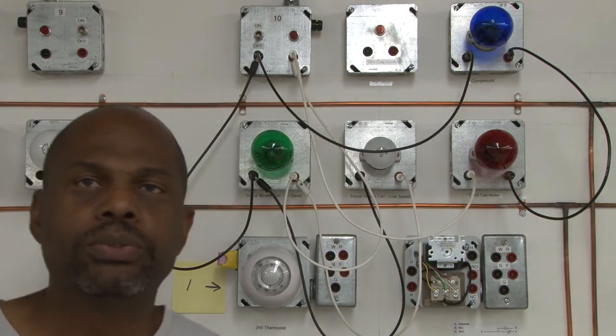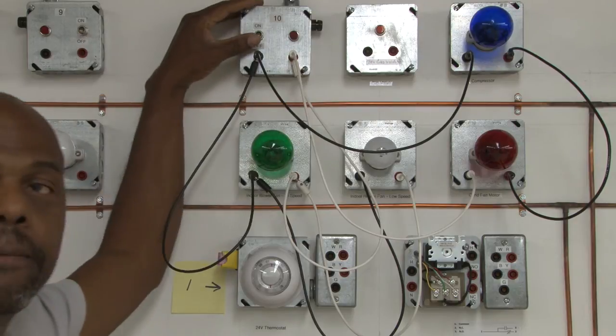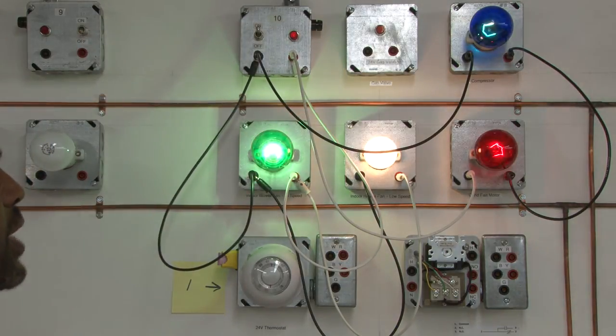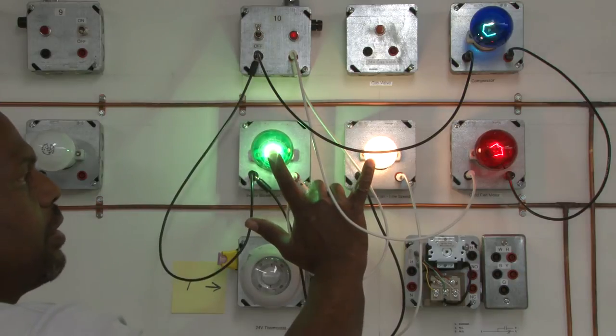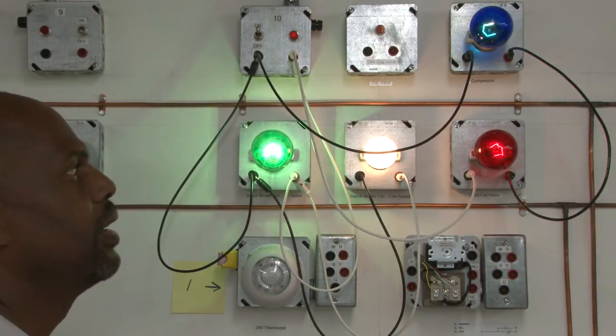So when I turn the power source on, we're going to look to see how it will affect each other. If you look at it, these two bulbs are glowing very brightly. These two bulbs are dim.